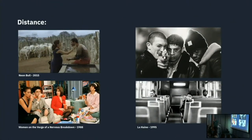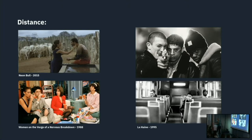Distance. It might seem arbitrary: characters closer to each other are probably buddies or lovers; further apart, less so. But distances are not arbitrary — they're very well thought out. In Neon Bull, these two are potential lovers, but she's pregnant, so there's something between them that's not quite working.